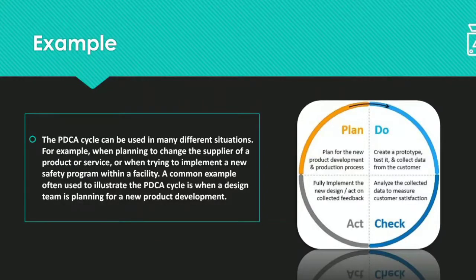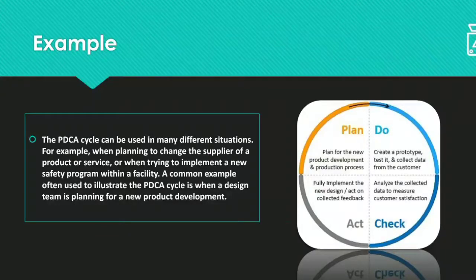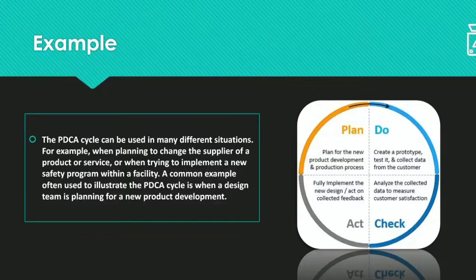Next is the Do step — you create a prototype based on whatever changes you planned. Then you test it on different parameters and collect data from testing machines and customers. After collecting all test results about the prototype, you analyze this data and measure whether the product's fitment meets customer requirements and how well the product design or specifications satisfy the customer's needs. That is what you check in the Check step.